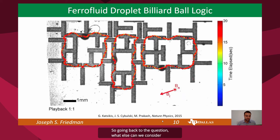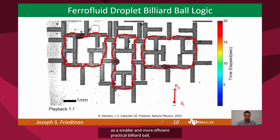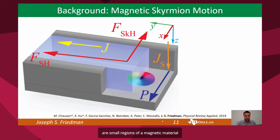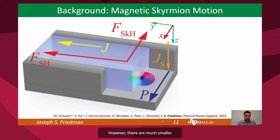So, going back to the question: what else can we consider as a smaller and more efficient practical billiard ball? Which leads us to magnetic skyrmions. Similar to magnetic bubbles, magnetic skyrmions are small regions of a magnetic material with magnetization opposite the rest of the material. However, they are much smaller, with radii smaller than 100 nm. In this work, we will discuss 20 nm skyrmions.